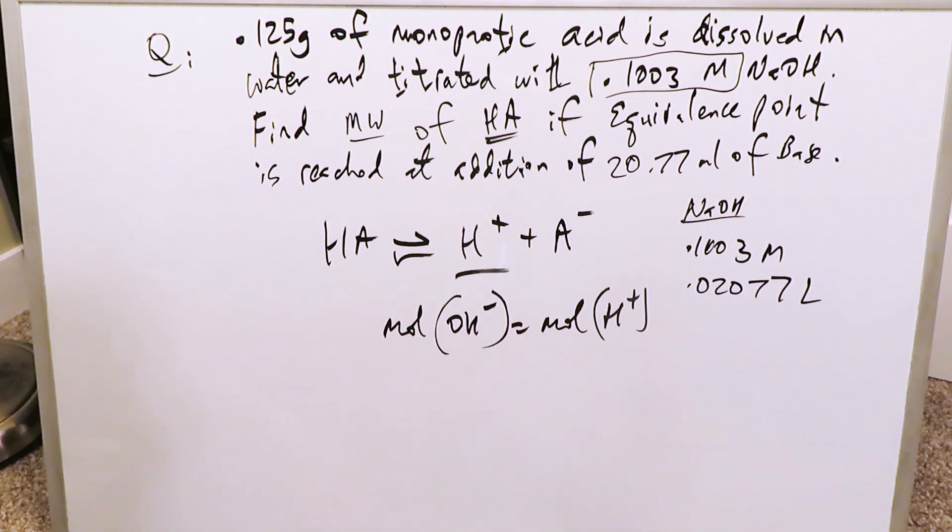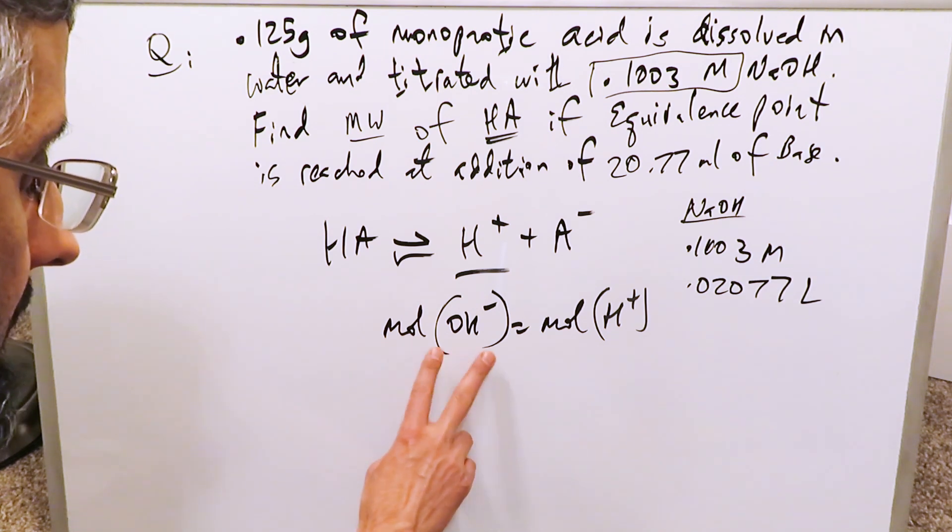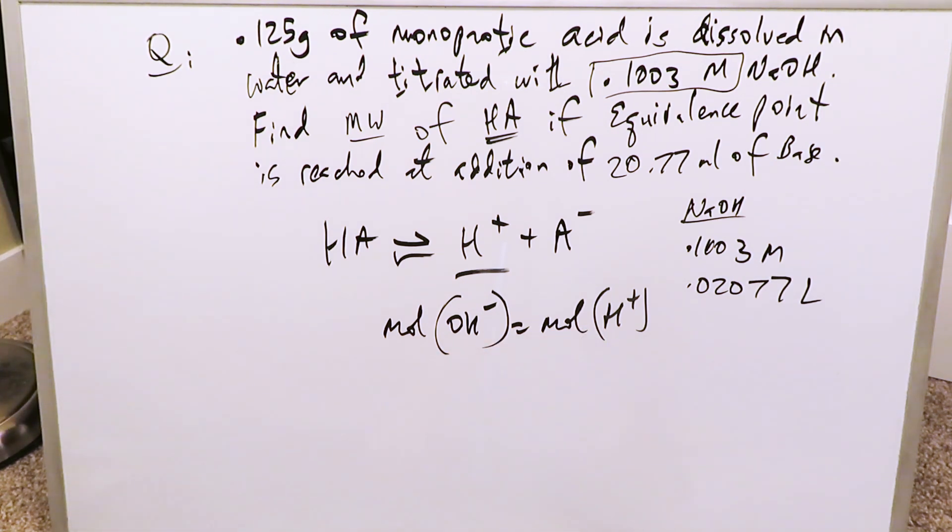That's how you know the equivalence point has reached. You have an indicator in the solution. As you're adding in your base, you're doing your titrating. At the equivalence point, the color changes. That color change reflects moles of one is equal to moles of the other.